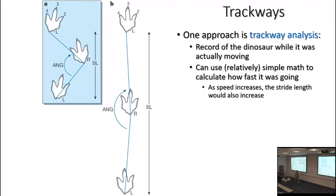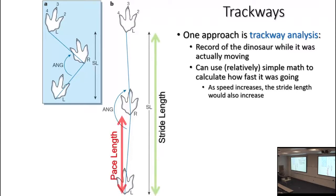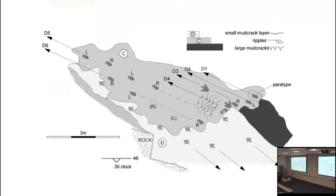Trackways, of course, are a succession of tracks, not an individual footprint. They have data in them like pace length — that's left to right or right to left — or the longer one, stride length, that's left to left or right to right. These are some of the data we can take from a trackway, and it turns out they're useful in interpreting aspects of locomotion. We can't see the animal moving itself, but we have a record of its motion.